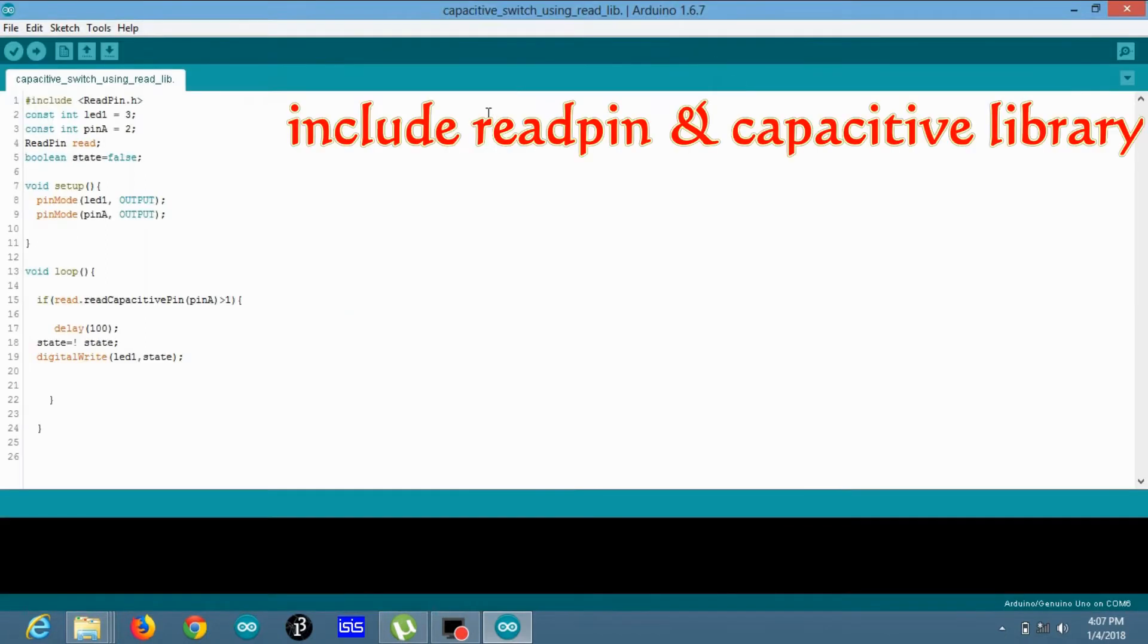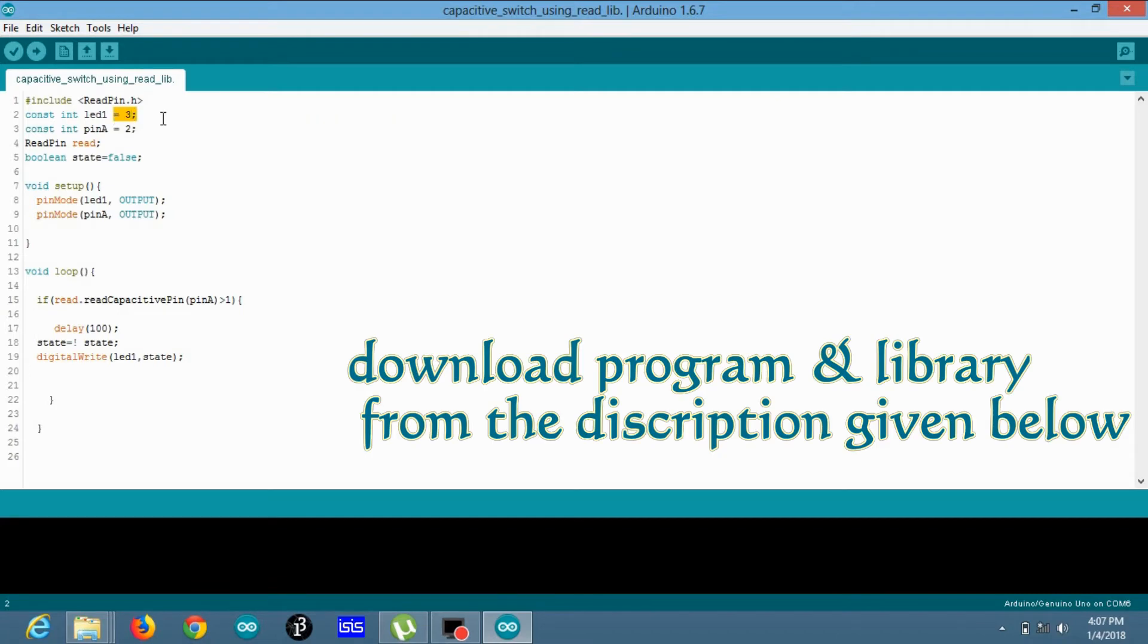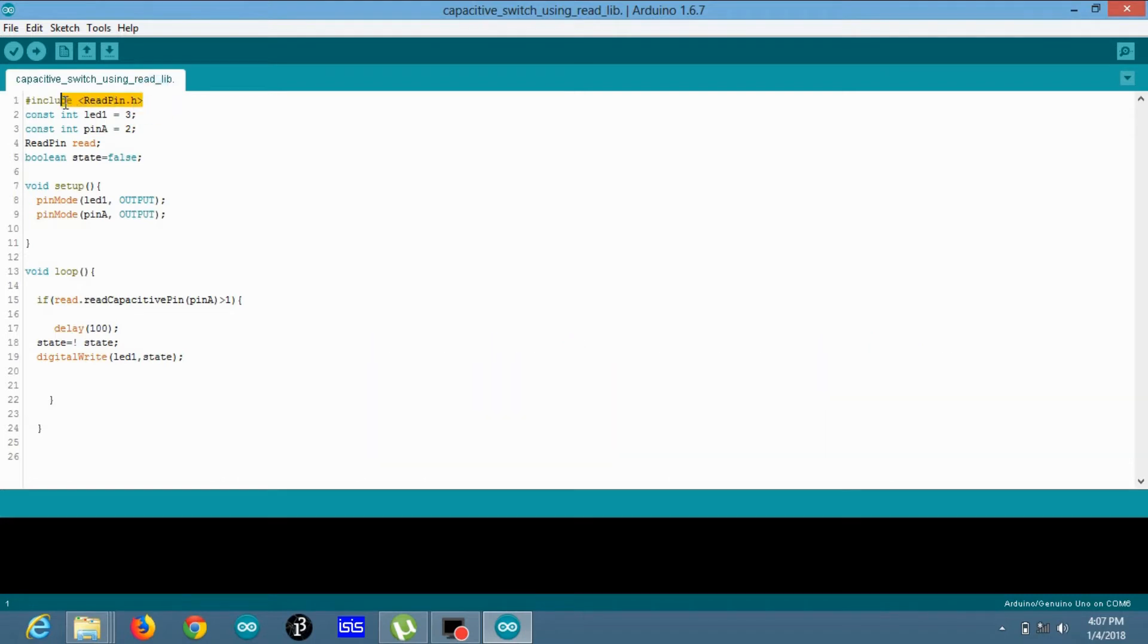Here the program: LED which is connected to the pin number 3 as you can see in the given connection diagram, and pin number 2 for sensing purpose, and include read pin library. So here.